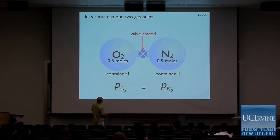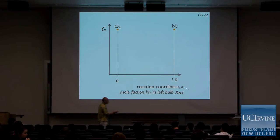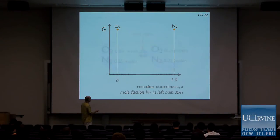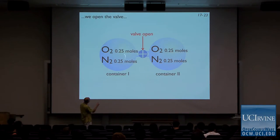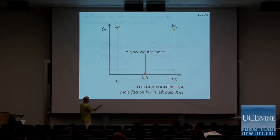Let's do a simple calculation. I've got O₂ on the left side, N₂ on the right side, half a mole of each. Now I'm going to open the valve. This reaction coordinate is the mole fraction of N₂. When I open the valve, I'll have 0.25 moles of O₂ and 0.25 moles of N₂ after everything comes to equilibrium. The mole fraction of N₂ is 0.25 over 0.5, which equals 0.5. So we're right here on this diagram after all the mixing has happened.